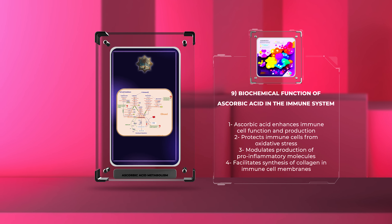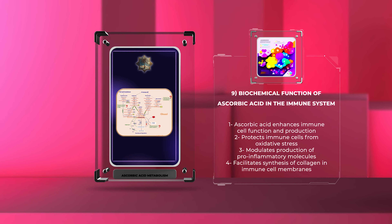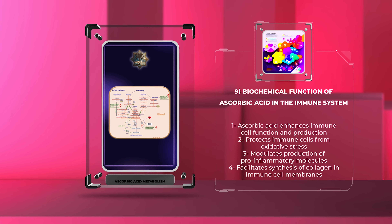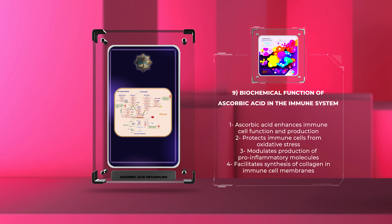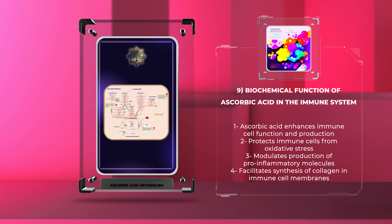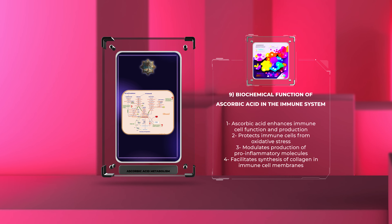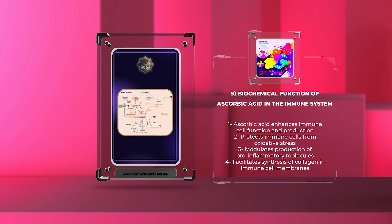It enhances the function and production of various immune cells, including neutrophils, natural killer cells, and lymphocytes. Ascorbic acid's antioxidant properties protect immune cells from oxidative stress while also modulating the production of pro-inflammatory molecules. Additionally, ascorbic acid facilitates the synthesis of collagen, an essential component of immune cell membranes, aiding in their integrity and functionality.